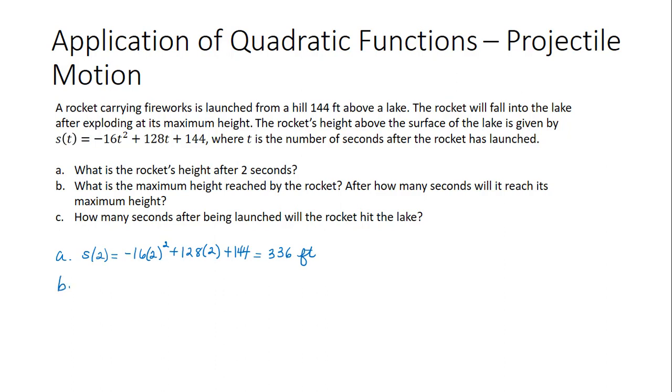Part B asks us to find what is the maximum height reached by the rocket, and after how many seconds will it reach its maximum height? Because this is a quadratic function whose graph opens down because of the value of a being negative, we know that the vertex is where the height will reach its max. So to answer the question about maximum height, we need to find the vertex of this function.